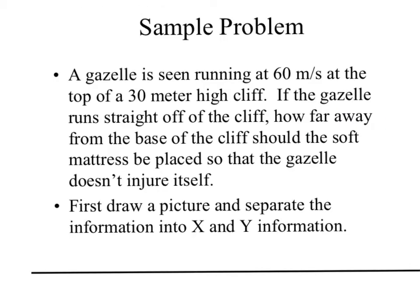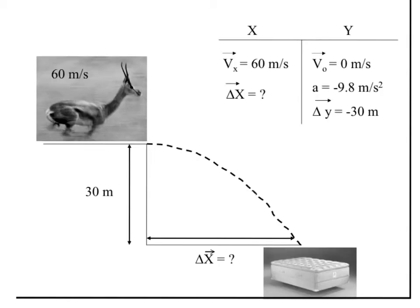Let's look at a sample problem using 2D kinematics. A gazelle is seen running at 60 meters per second at the top of a 30 meter high cliff. If you run straight off the cliff, how far away from the base of the cliff should the soft mattress be placed so that the gazelle doesn't injure himself? First you want to draw a picture and definitely separate information into X and Y. So here's a picture of your gazelle running 60 meters per second to the right. The height is 30 meters going down. We're looking for where to place your mattress.